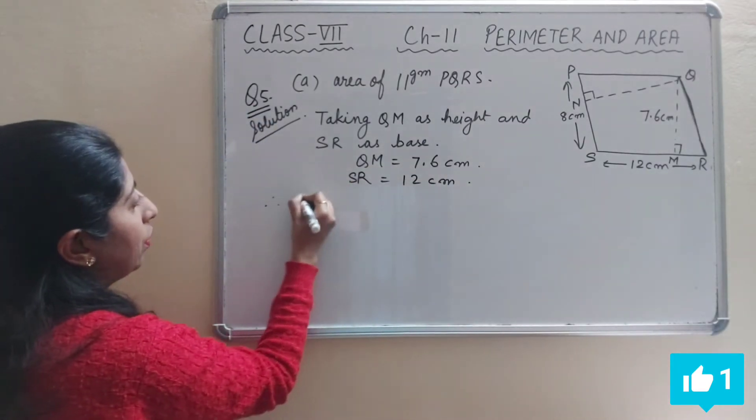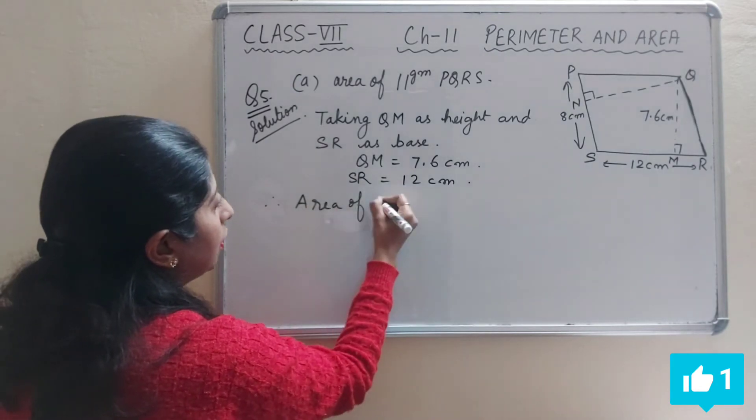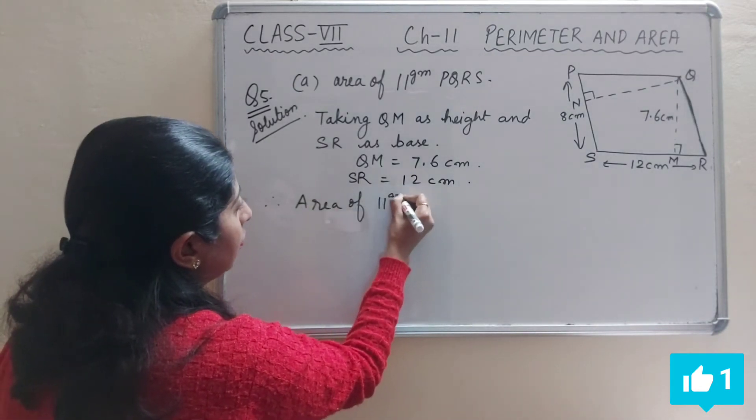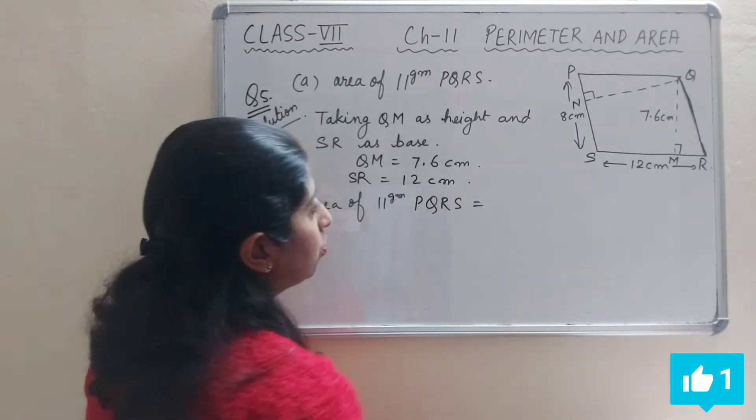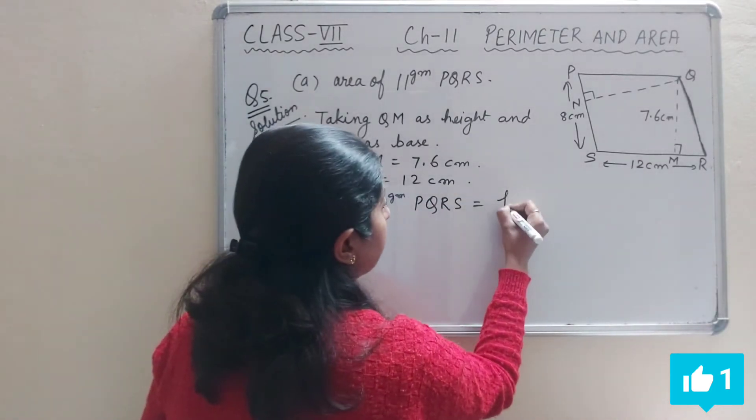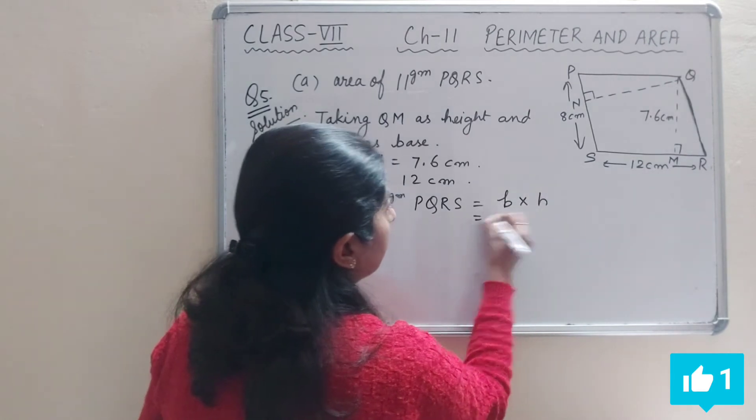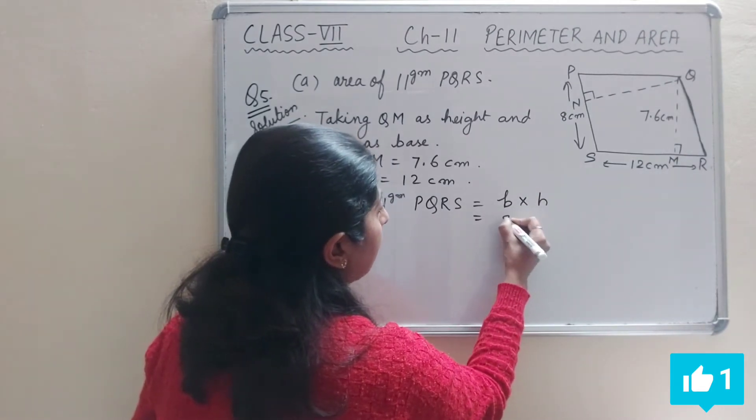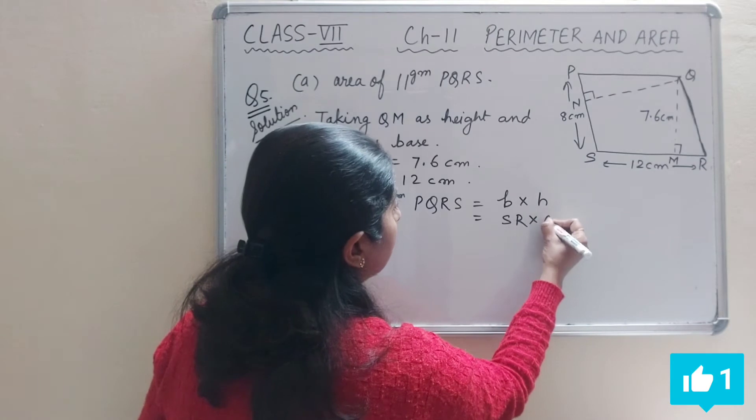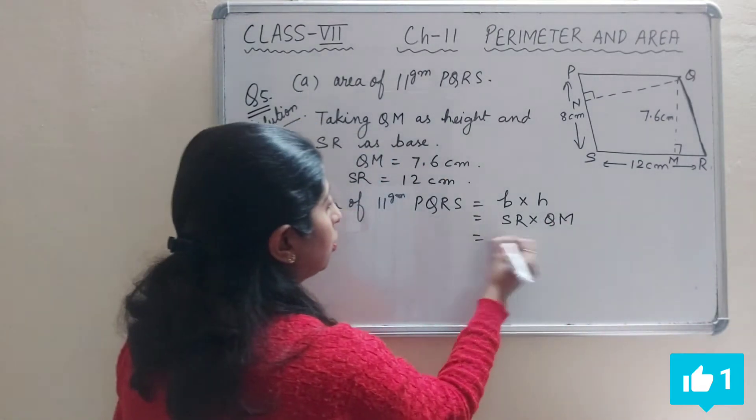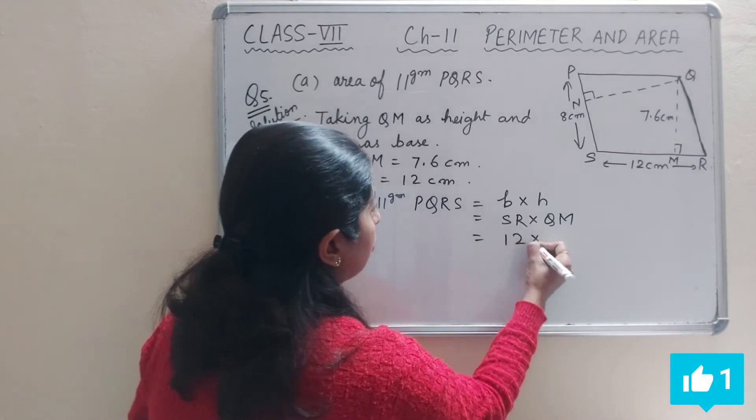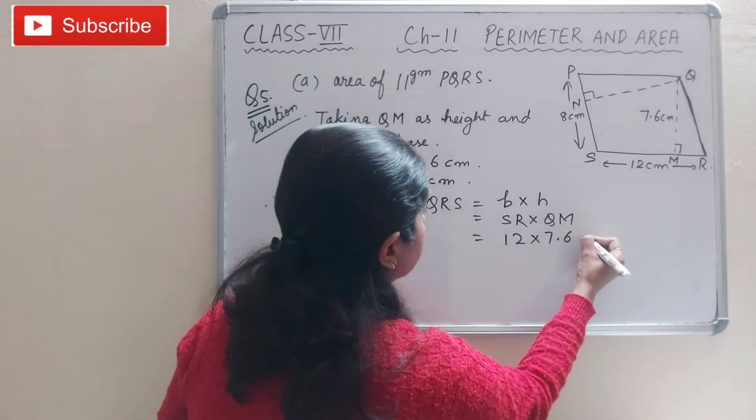Therefore, area of parallelogram PQRS is equal to base times height, which equals SR times QM. Now we'll put the values here: SR is 12 and QM is 7.6.